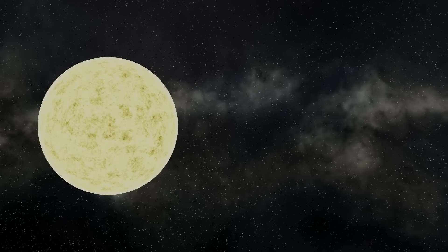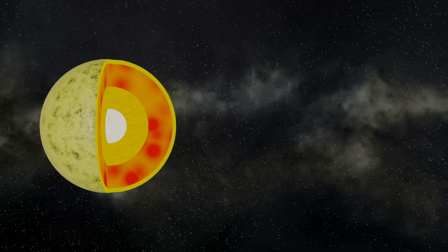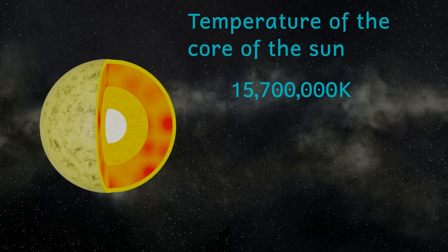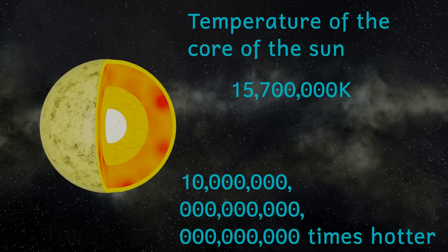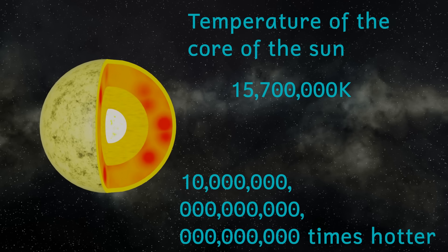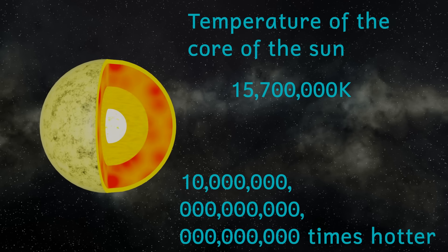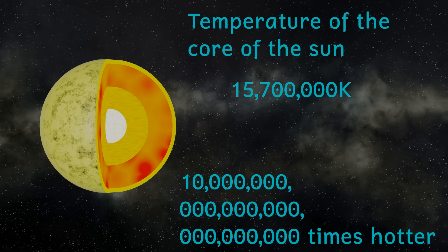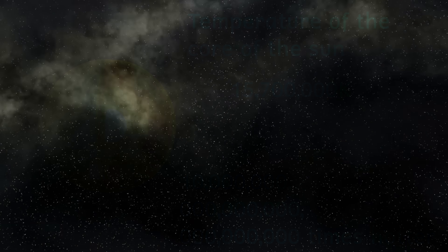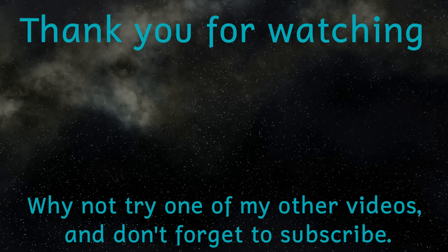So just how unbelievably hot is the Planck temperature? Well, let's start by imagining just how hot the core of the sun is. The Planck temperature is 10 million billion billion times hotter than the centre of our sun. This is a temperature where our physical laws as we understand them break down. We don't know if it's possible to even get to, let alone go above, this temperature — but what we do know is that if we do, we have no idea what will happen. Anyway, it's time to come back to the relative cool of planet Earth. If you enjoyed this video, hit that subscribe button for more geeky content. Until next time, thank you for watching.